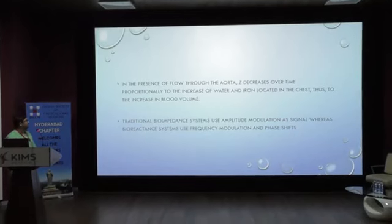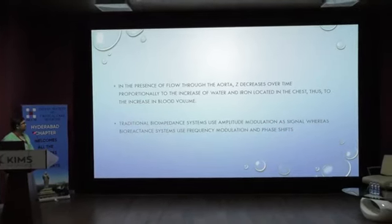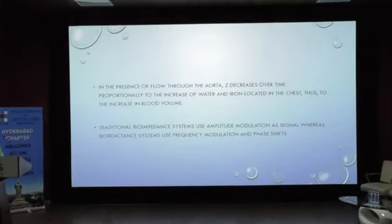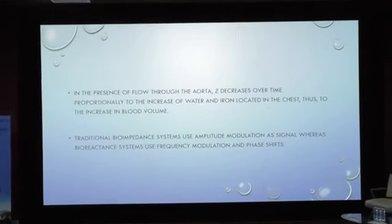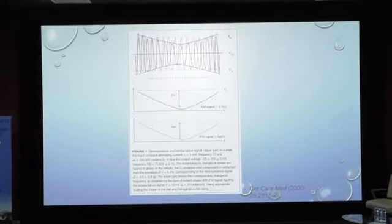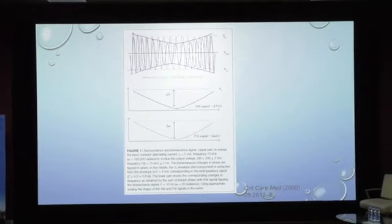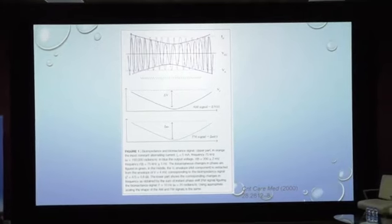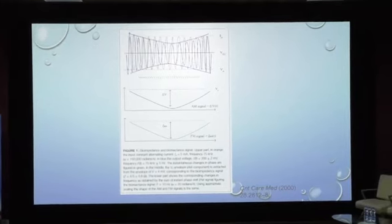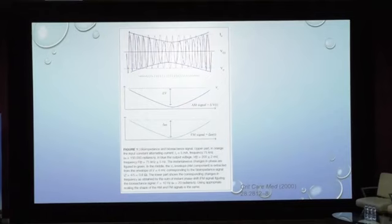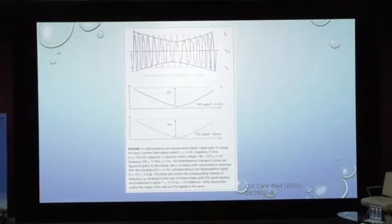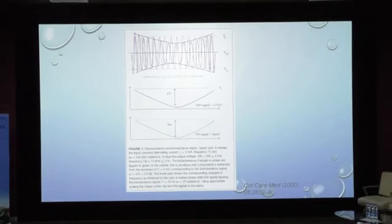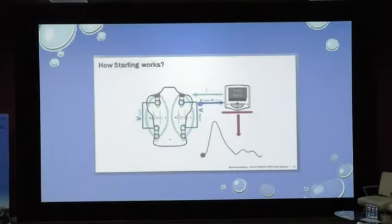Bioimpedance and bioreactance work in a slightly different manner. Bioimpedance systems use amplitude modulation as the signal, whereas bioreactance uses frequency modulation and phase shifts. There are two currents — voltage and current — flowing through the chest via electrodes, and we look for the shifts. These AM and FM signals are correlated to derive the cardiac output.